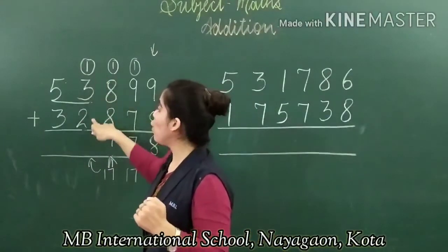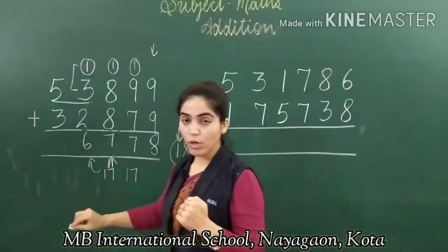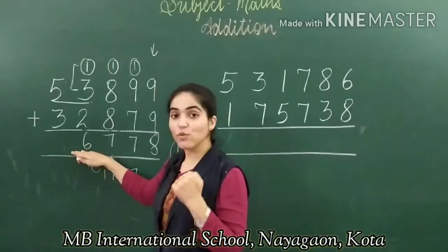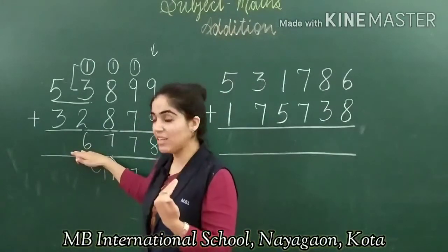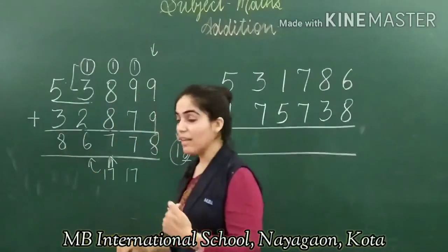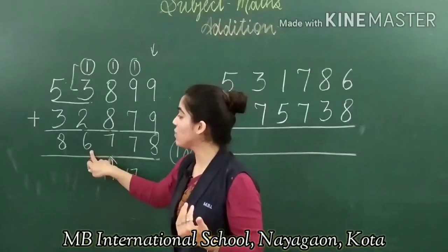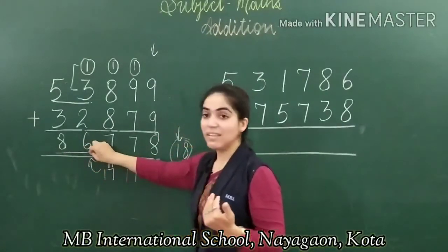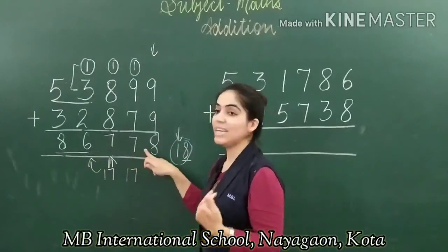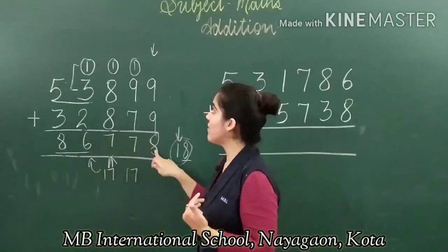Three plus one is four, four plus two is six. Here the answer is a single digit so no carry goes forward. Five plus three is eight. Reading the full answer — ones, tens, hundreds, thousands, ten thousands — it is in the thousands series. Reading together: 86,778. So the sum is 86,778.